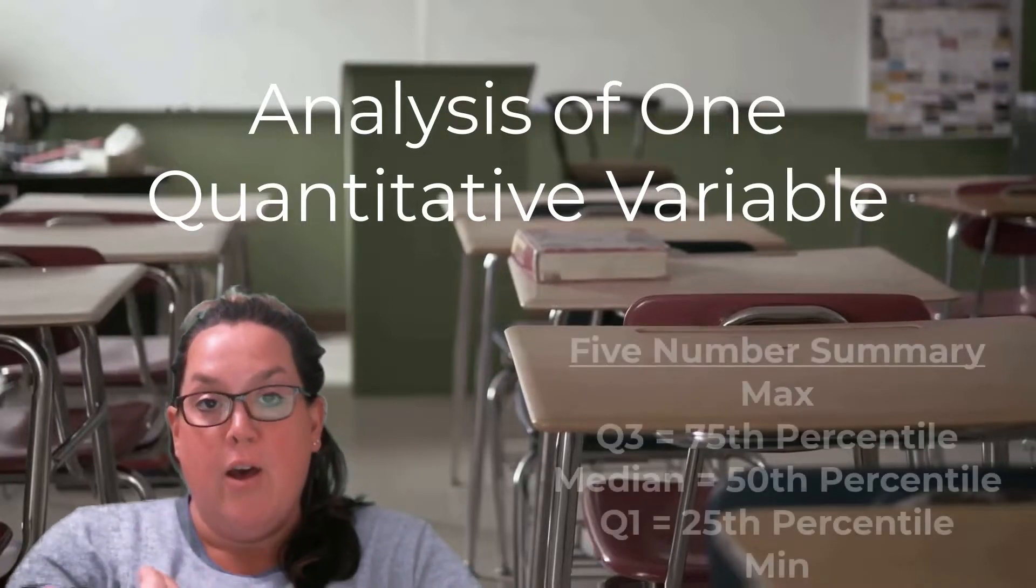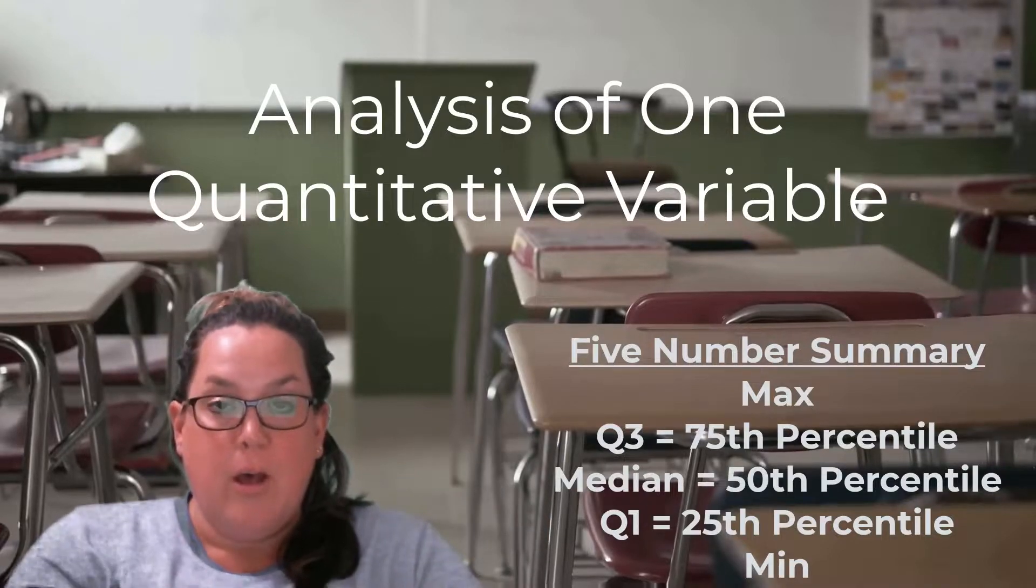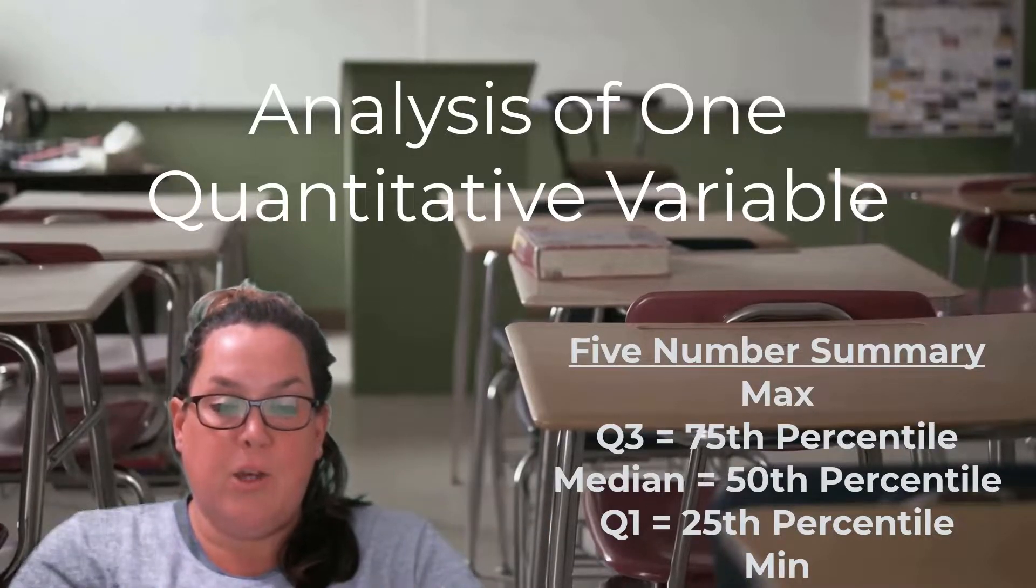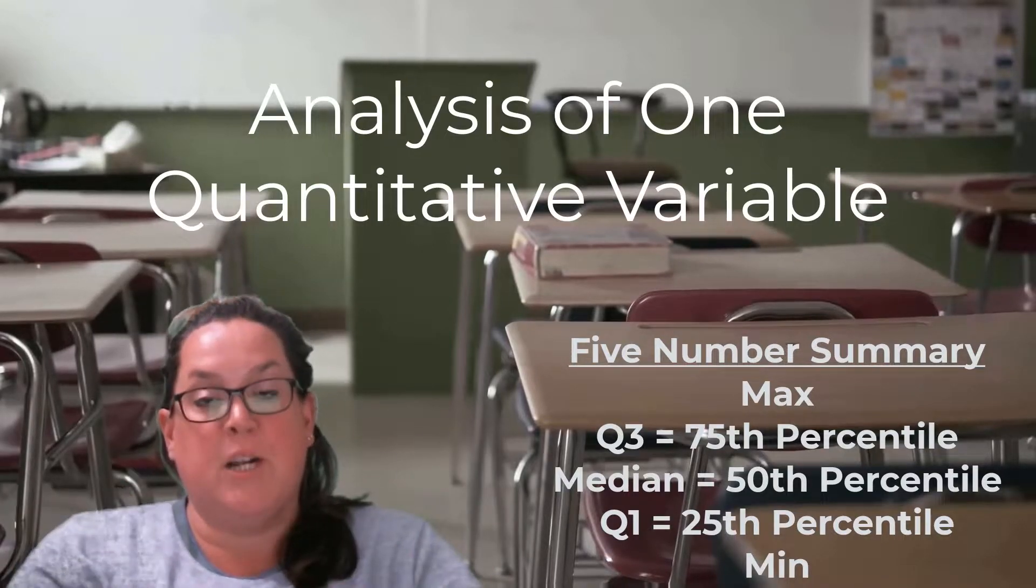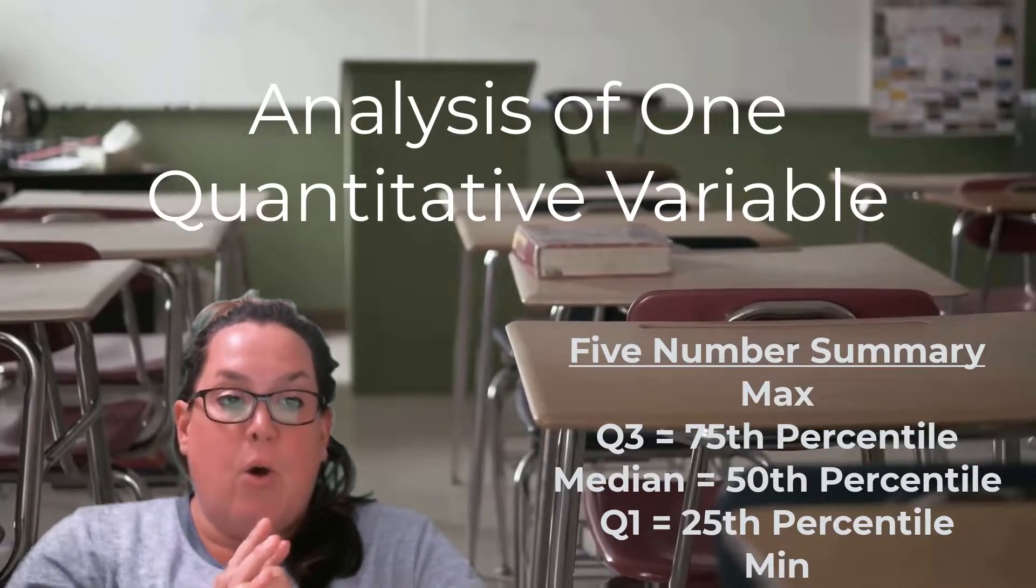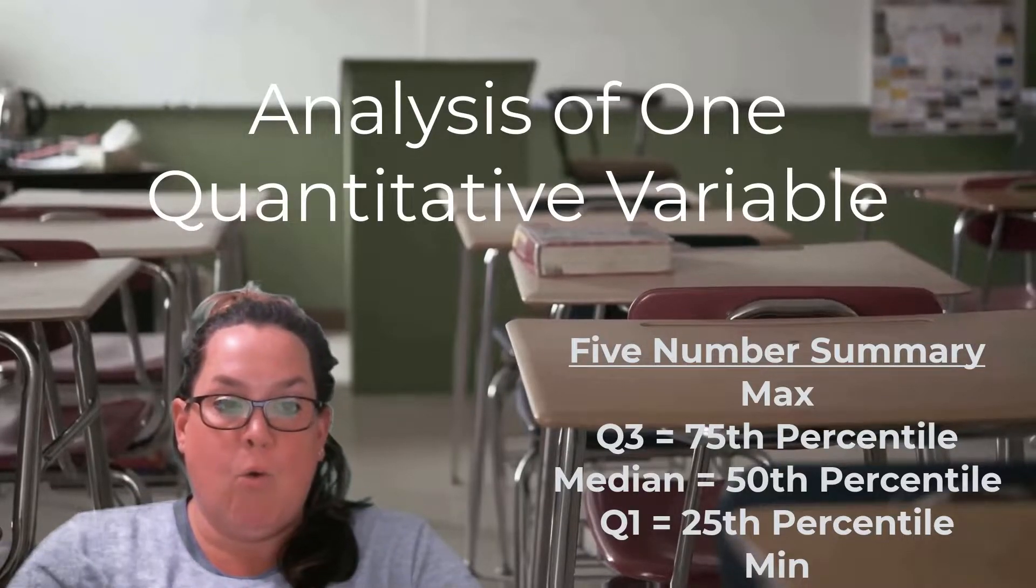So Q1 could also be called the 25th percentile, the median can be called the 50th percentile, and Q3 can be called the 75th percentile because of what percent of data is below it. So those measurements, percentiles and the five number summary, require that your data be in order.